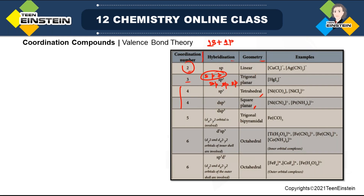When it is linear geometry — coordination number two means two ligands on two sides. Examples: Cu with 2 Cl⁻, and Ag attached to 2 Cl⁻. For trigonal planar (sp²): HgI₃⁻. For sp³ tetrahedral, a very common example is nickel tetracarbonyl and nickel tetrachloride. When it is dsp² (square planar), platinum complexes are very important — for platinum at coordination number four you will always get square planar geometry.